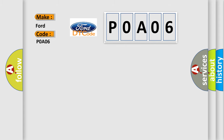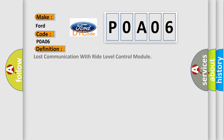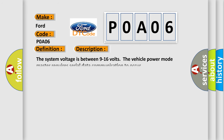The basic definition is: Lost communication with right level control module. The system voltage is between 9 to 16 volts. The vehicle power mode master requires serial data communication to occur.